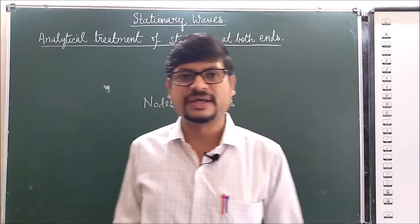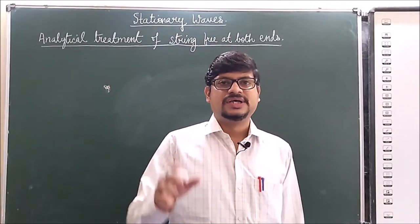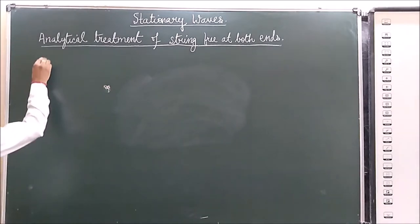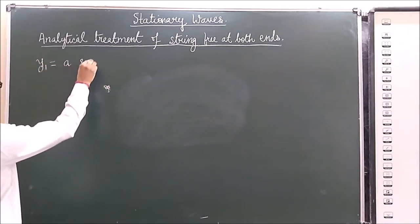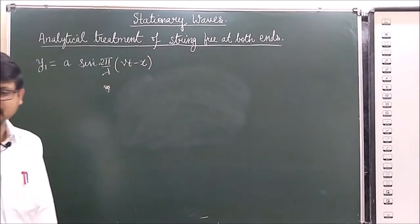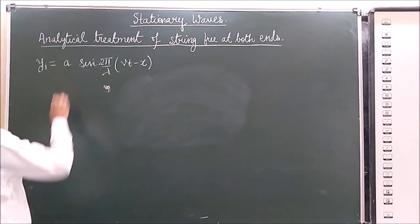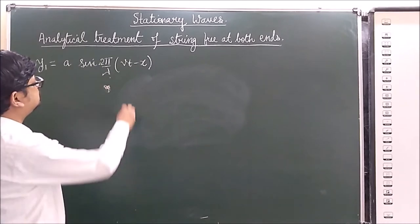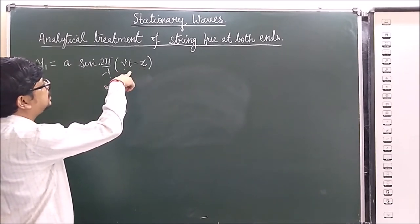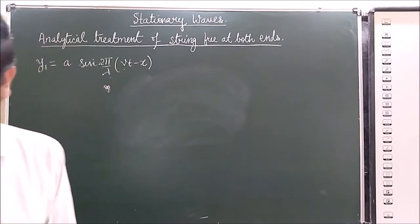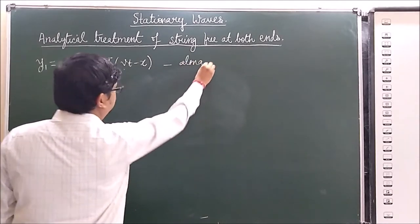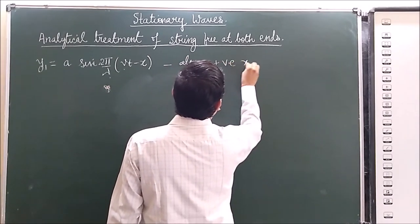Now we will do the analytical treatment. We consider a sinusoidal wave traveling in the positive x-direction with displacement y₁ = a sin(2π/λ)(vt − x), where a is the amplitude, λ is the wavelength, v is the velocity of the wave, t is the instant of time, and x is the position.